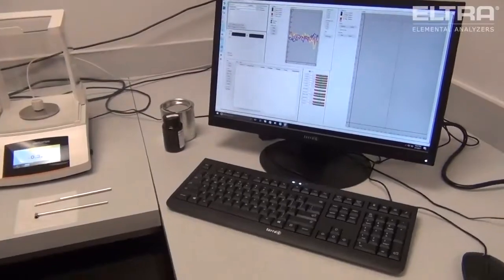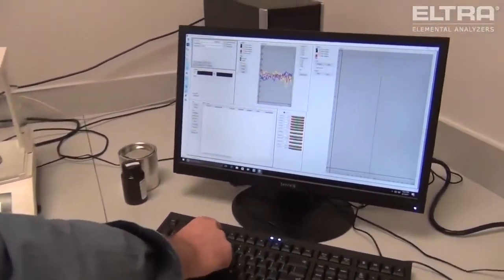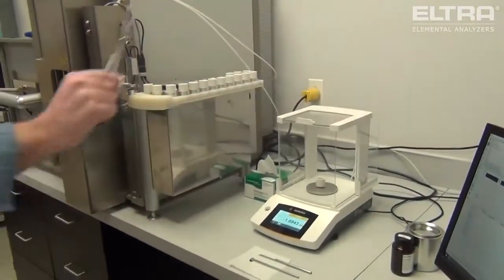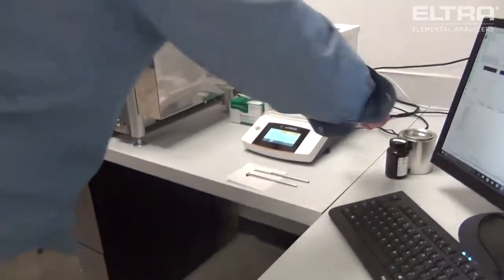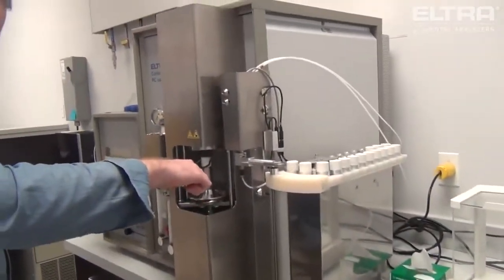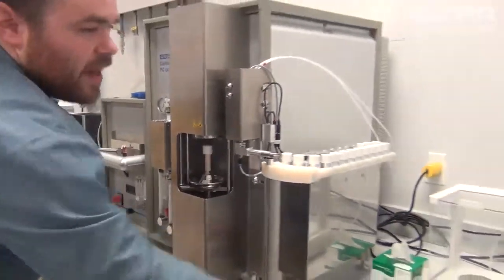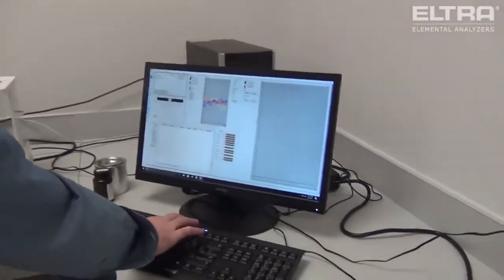Transferring the sample weight to the PC is as easy as pressing F4. Now that the software has the weight for the sample, we will now take the crucible, put it onto the pedestal, and starting an analysis is as easy as pressing F5.